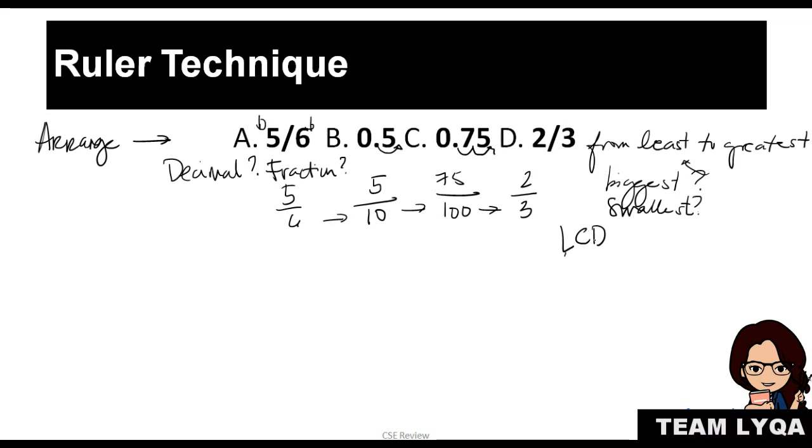But the thing is, that's kind of complicated because you have to think about the multiples of 6, 10, 100, and 3 that are the same. Some people may know that right off the bat, but if you're not one of those people, that's okay. There is another way you can solve this, and that is the ruler technique.